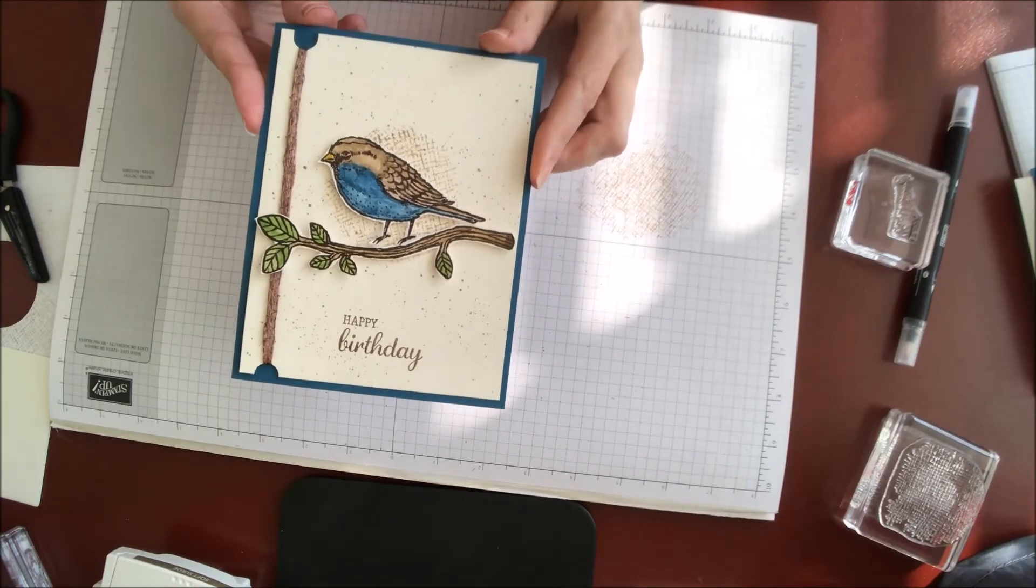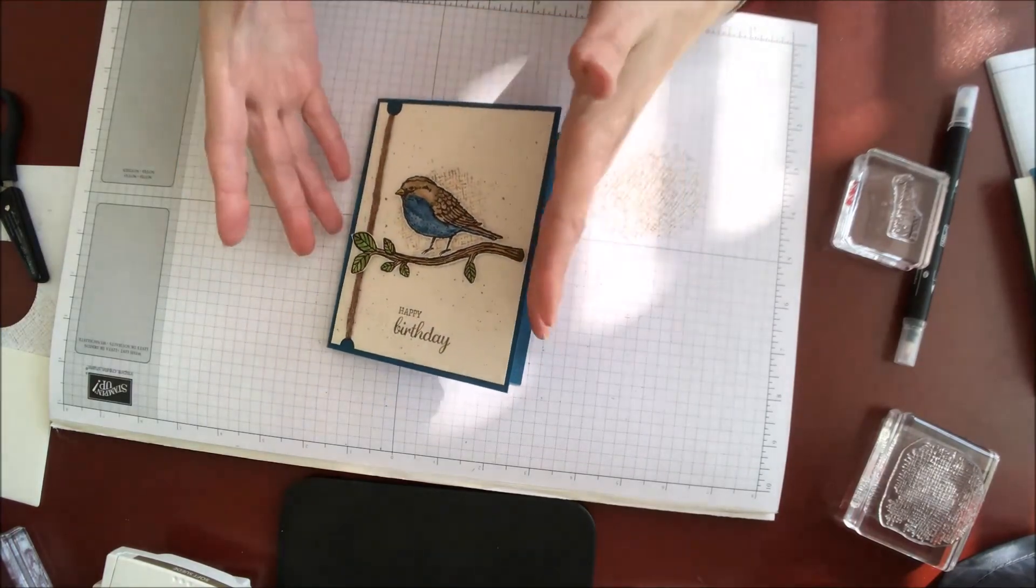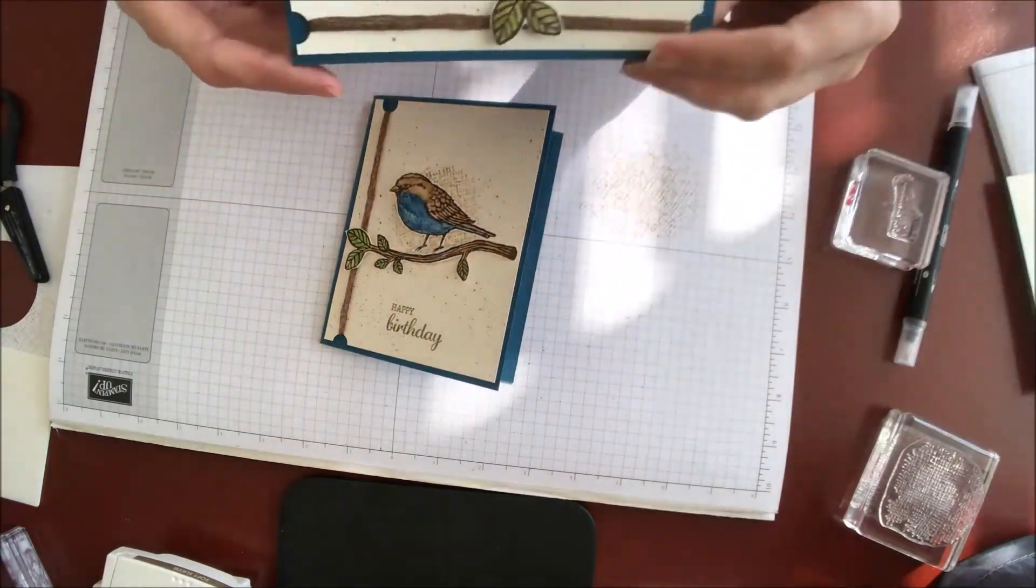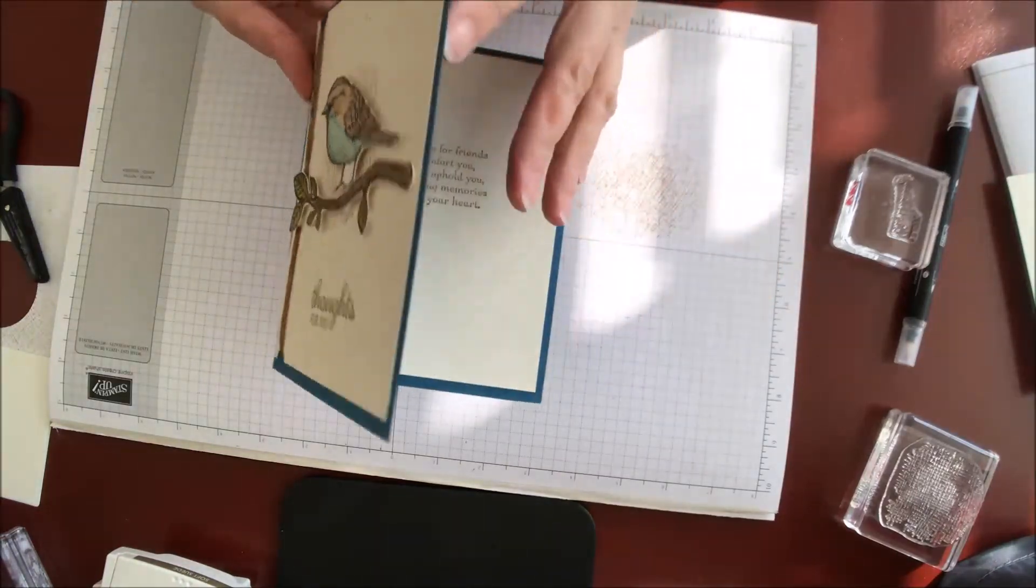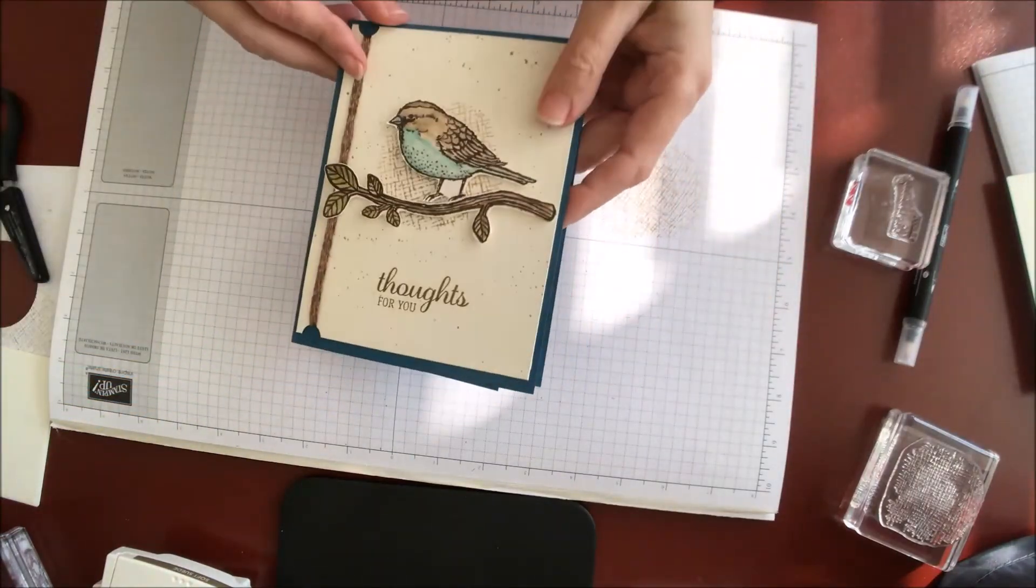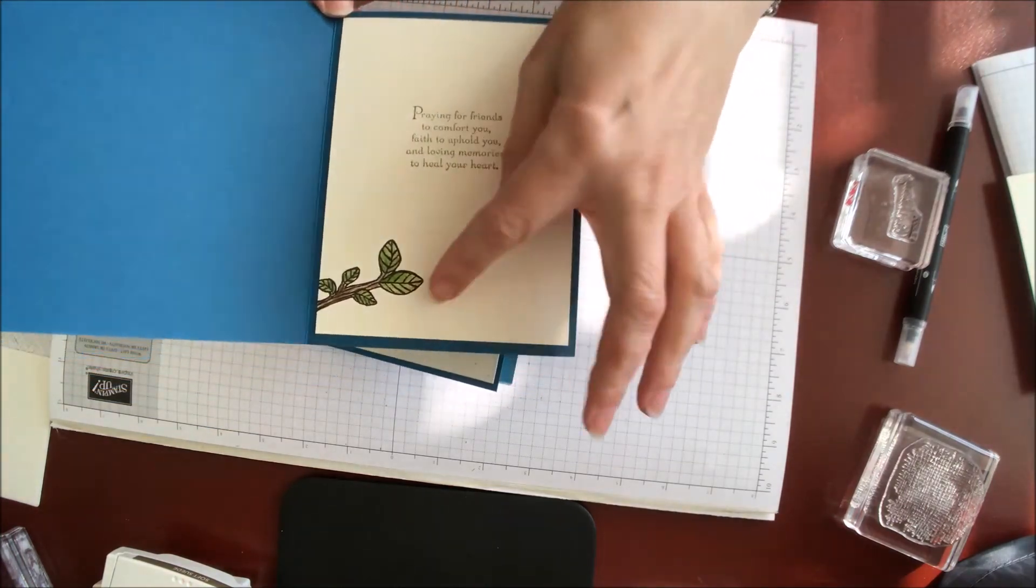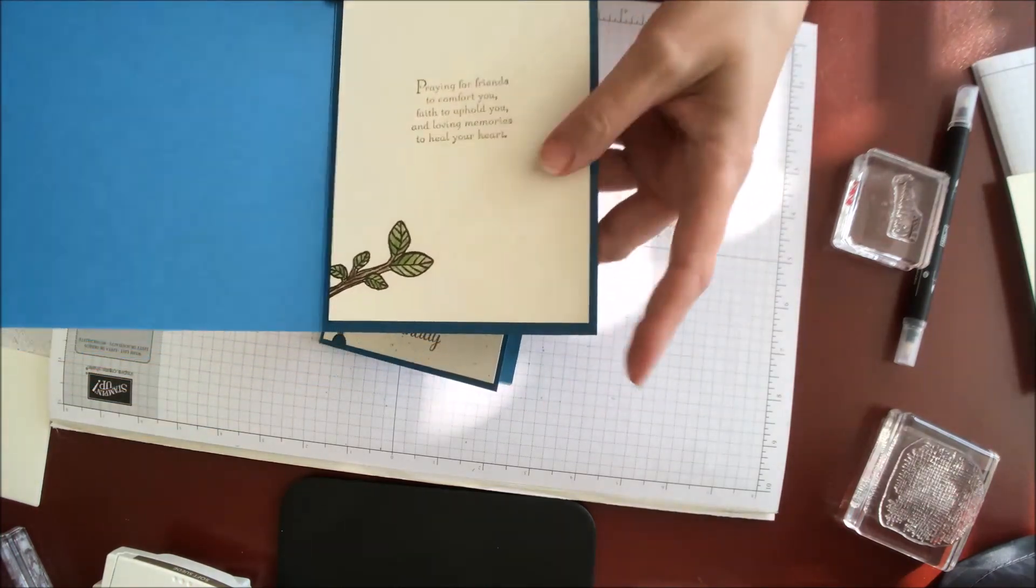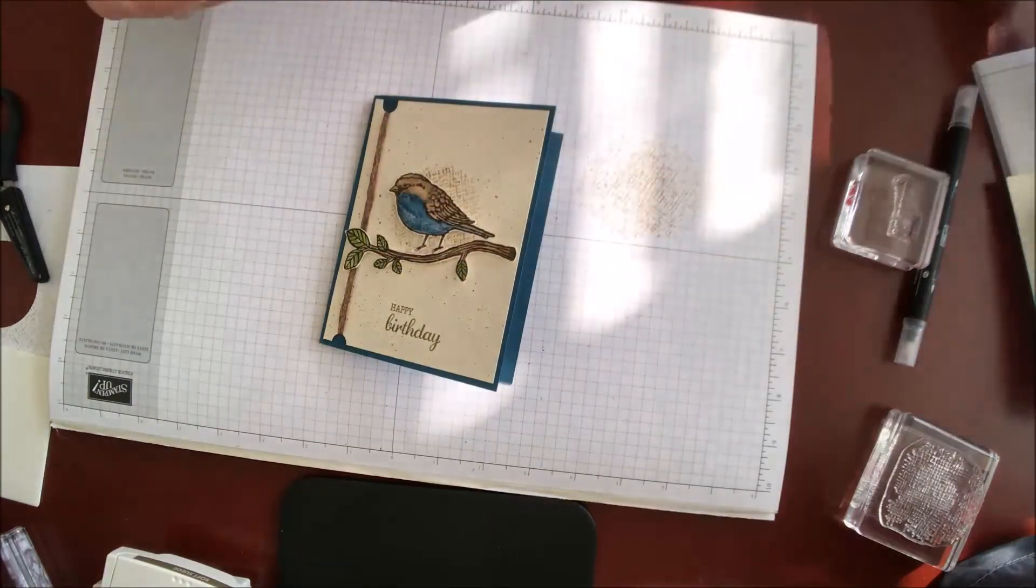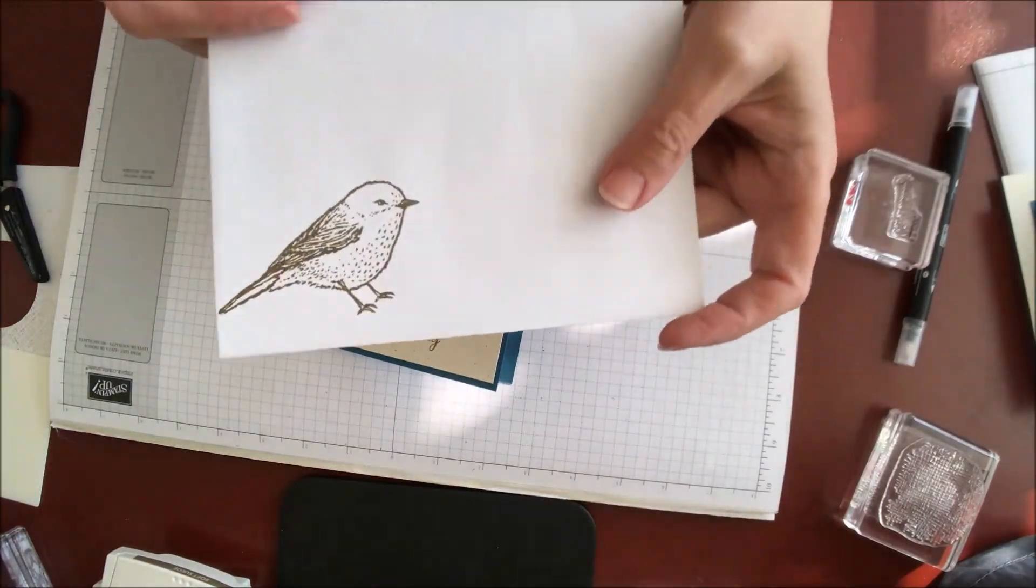You have your finished card. Well, this is the finished card front. Now in this one, I'll show you, I went ahead, this one was a sympathy card actually, so I went ahead and stamped a leaf on the bottom inside panel and my sentiment there. And then I also stamped the envelope. I hope you guys enjoyed this project.